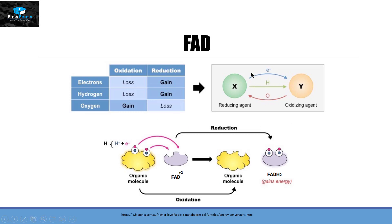For oxidation and reduction, if a compound is oxidized it will lose electrons, lose hydrogen, or gain oxygen. To reduce a compound, it needs to gain electrons, gain hydrogen, or lose oxygen. In a reaction of an organic molecule with FAD²⁺, the organic molecule loses hydrogen and electrons — hydrogen represented by blue circles and electrons by pink circles — so FAD²⁺ gains these and reduces itself into FADH₂. FADH₂ is the reduced form of FAD²⁺.